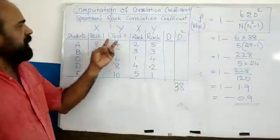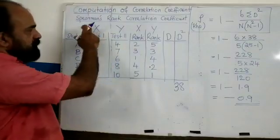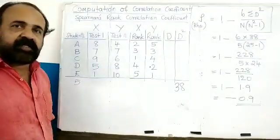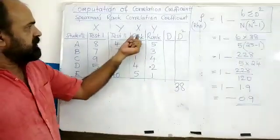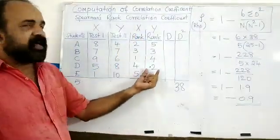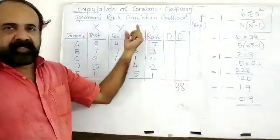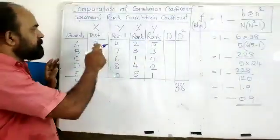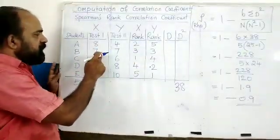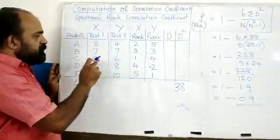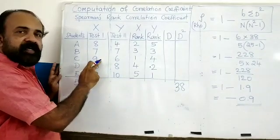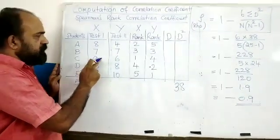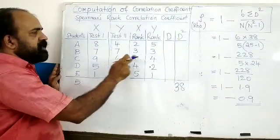Now, if you are given values, we need to find the correlation between them. So when you do this, assign ranks to the x values — rank 1, rank 2, and so on — and similarly rank the y values.